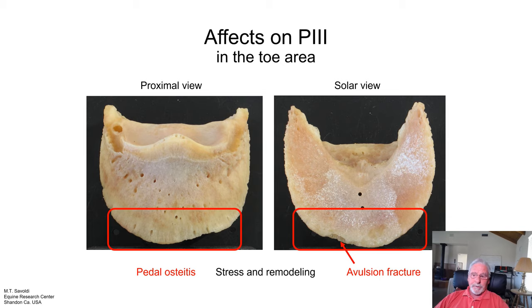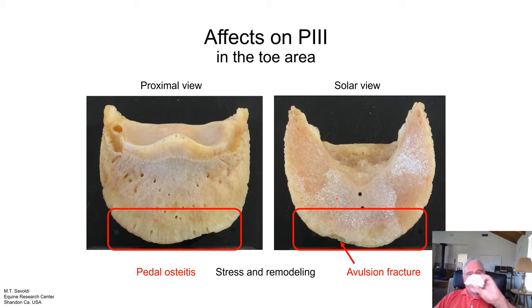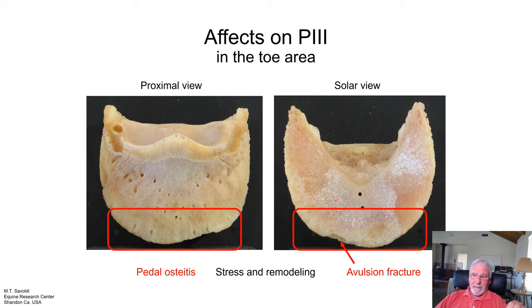These are the holes I drilled. This is the horny frog, and this is the sensitive frog. You can see they don't align — even this little tiny one is off alignment. What does that tell you? It tells you that the P3 bone has a little different movement inside the capsule than the hoof wall tells us.